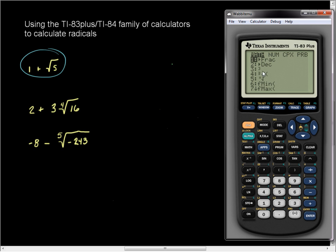then press math, choose option 5 by scrolling or pressing the number 5, and then in parentheses, I always recommend using parentheses, put your 16. Close the parentheses of the radical. Press enter. And so the 4th root of 16 is 2, 3 times 2 is 6, plus 2 is 8, and so that's true.